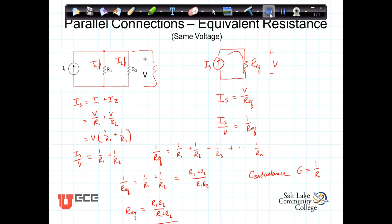In terms of the conductance then, we can say if we have N resistors connected in parallel, their conductance, the equivalent conductance G eq, will equal G1 plus G2 plus on out to GN.